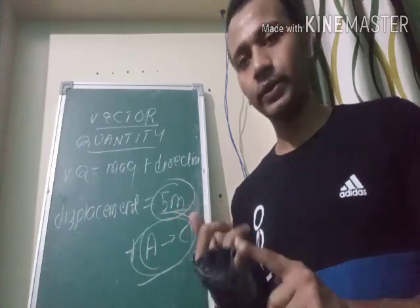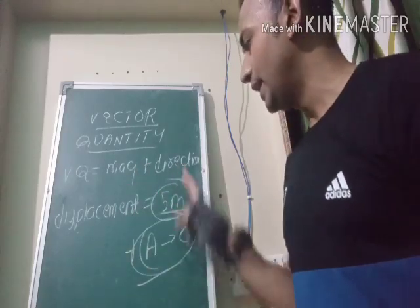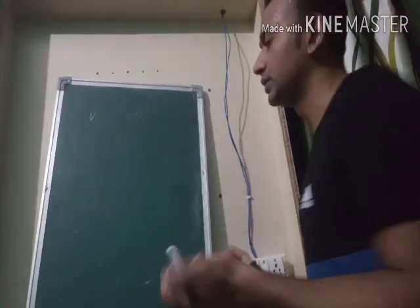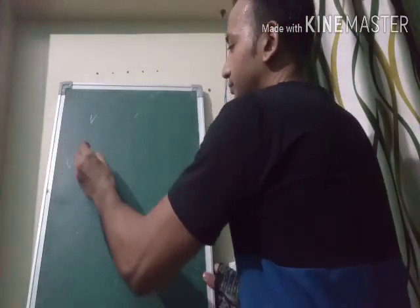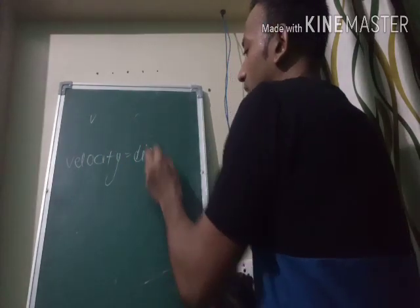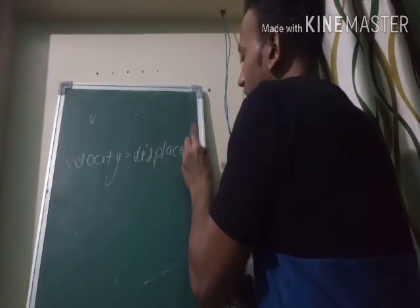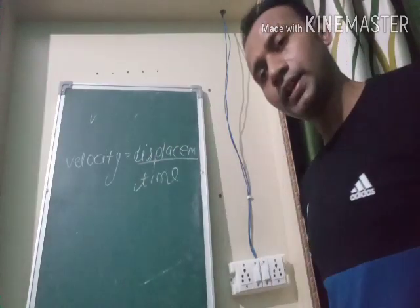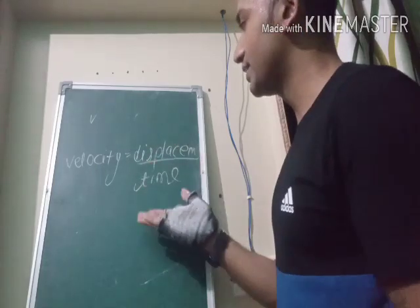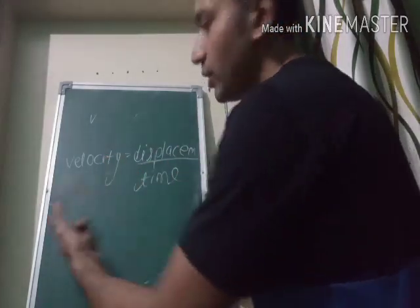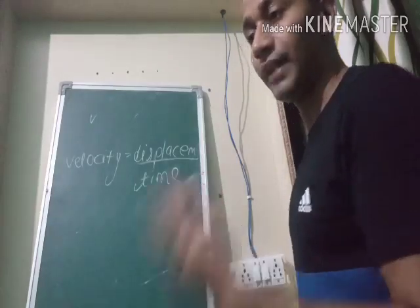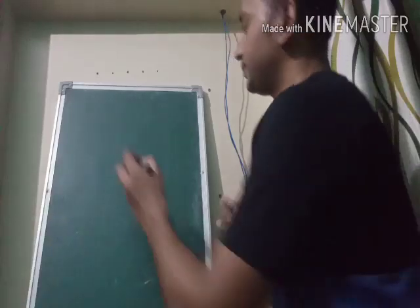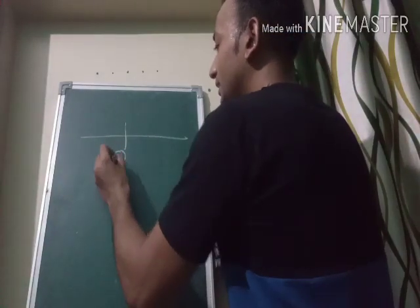So to recap: a scalar quantity depends only on magnitude, while a vector quantity depends on both magnitude and direction. Another example of a vector quantity is velocity. Velocity equals displacement divided by time. Since displacement is a vector quantity, velocity is also a vector quantity.